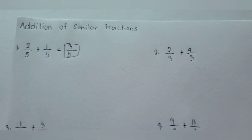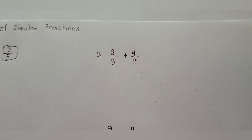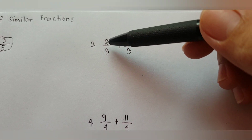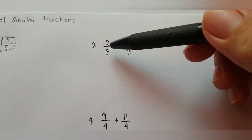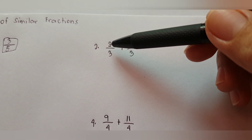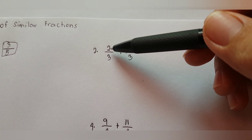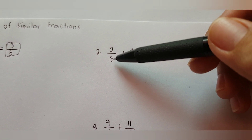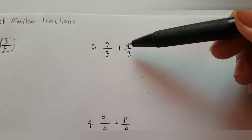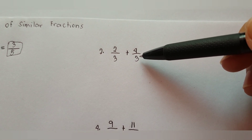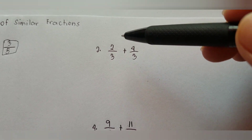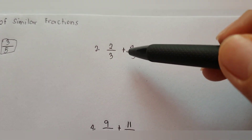Let us proceed to example number two. We have the fractions two-thirds and four-thirds. Two-thirds is a proper fraction because the numerator is smaller than the denominator. Four-thirds is an improper fraction because four is greater than three.